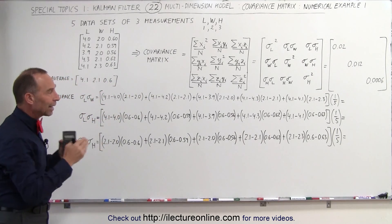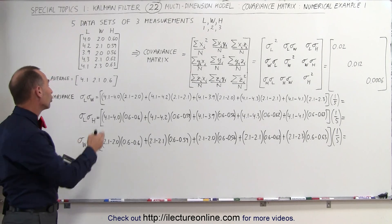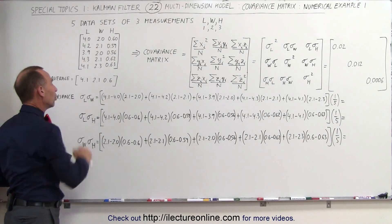When we multiply all that together, we add it all up, then we divide by 5, there's five readings, we then get what we call the covariance between the length and the width.